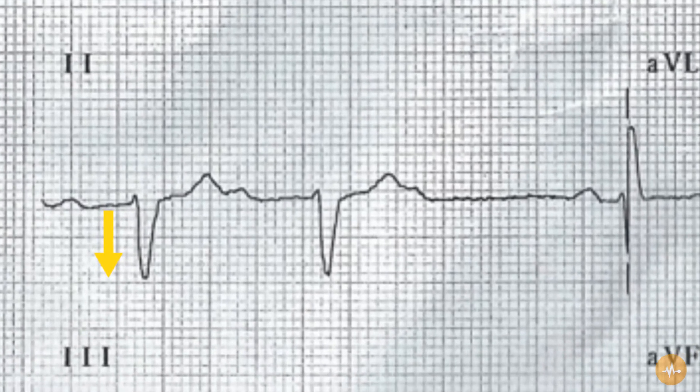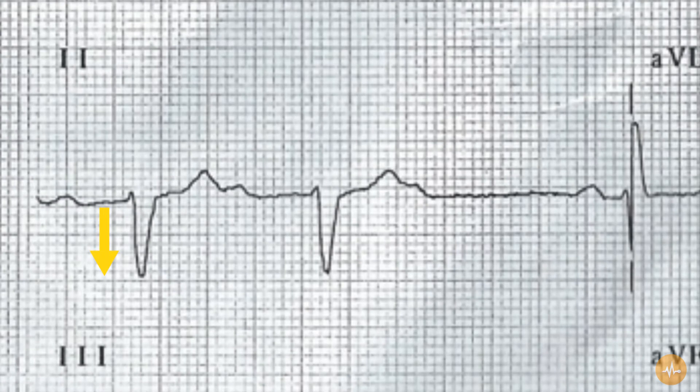The conducted P waves are regular and normal in morphology, but the QRS interval is at the border of prolonged, at approximately three small squares.